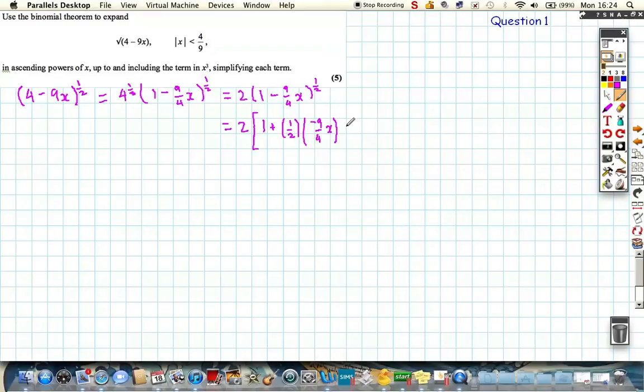And then we add n times n minus 1, all divided by 2 factorial, which is just 2. And then we get our x, which is minus 9 over 4, very important negative sign, squared.